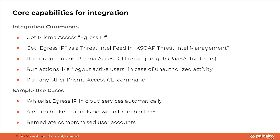Using these different commands, here are some sample use cases which can be implemented within Cortex-XOR. One of the use cases we are going to show in a live demo right after is whitelisting egress IPs in cloud services. The other couple of use cases that can be implemented are detecting and alerting on broken tunnels between branch offices, or remediating compromised user accounts by logging out those users.